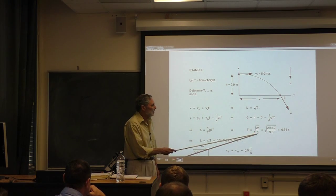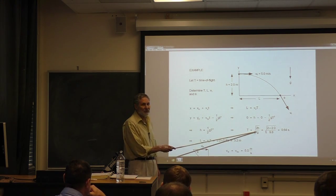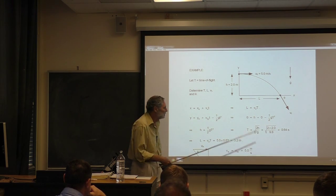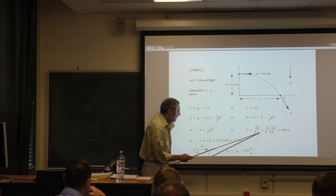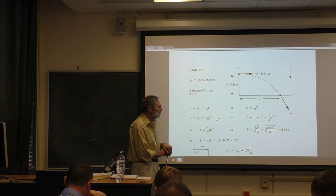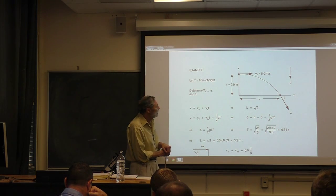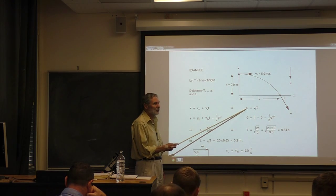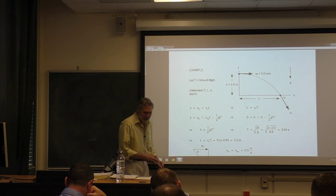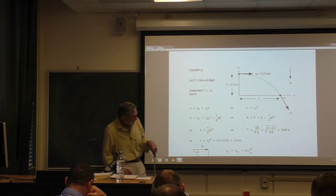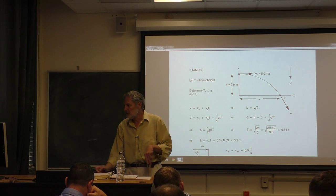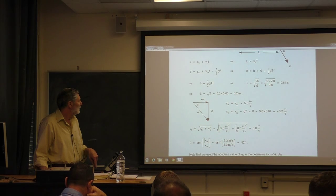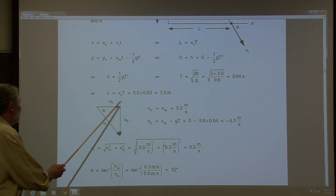Now I've got one equation and one unknown. Everything is in SI units, so I get t = √(2×2/9.8) — punching this into my calculator gives 0.64 seconds. Now that we know the time of flight, we go back to our x-equation. This has become one equation and one unknown, so we can find the range: L = v₀ × t, giving us 3.2 meters.